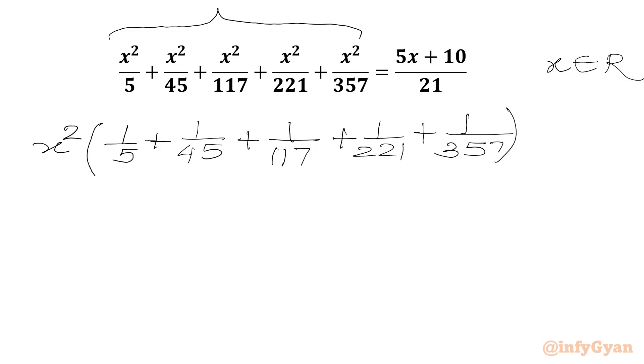Now from the RHS we will take 5 common from the numerator. We will get x plus 2 in the bracket, and the denominator is 21.